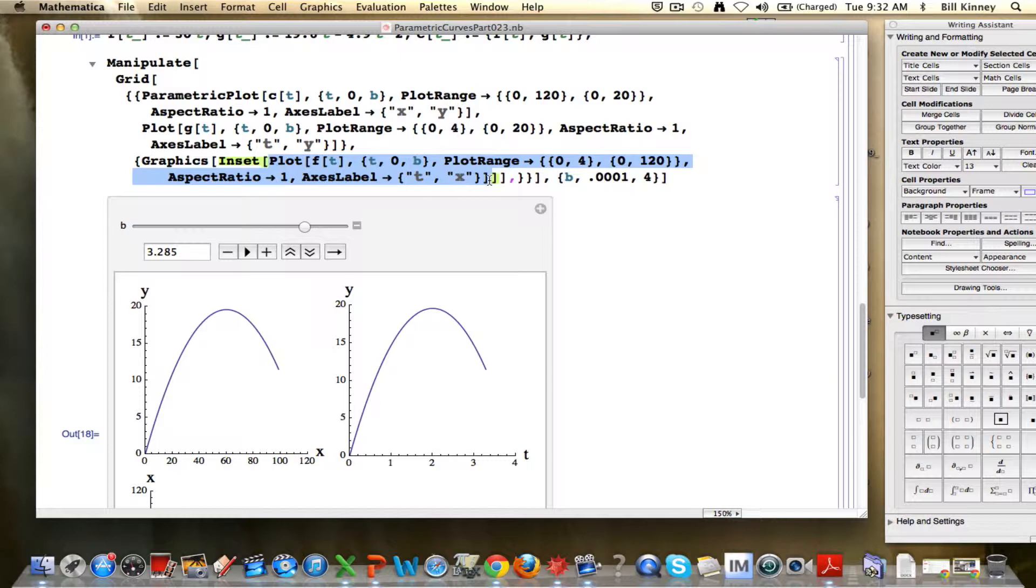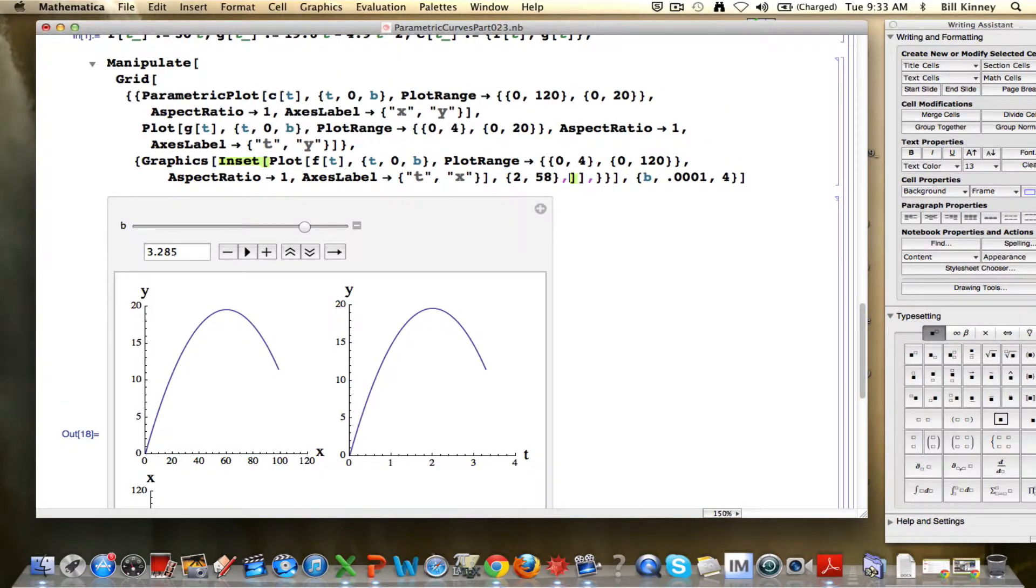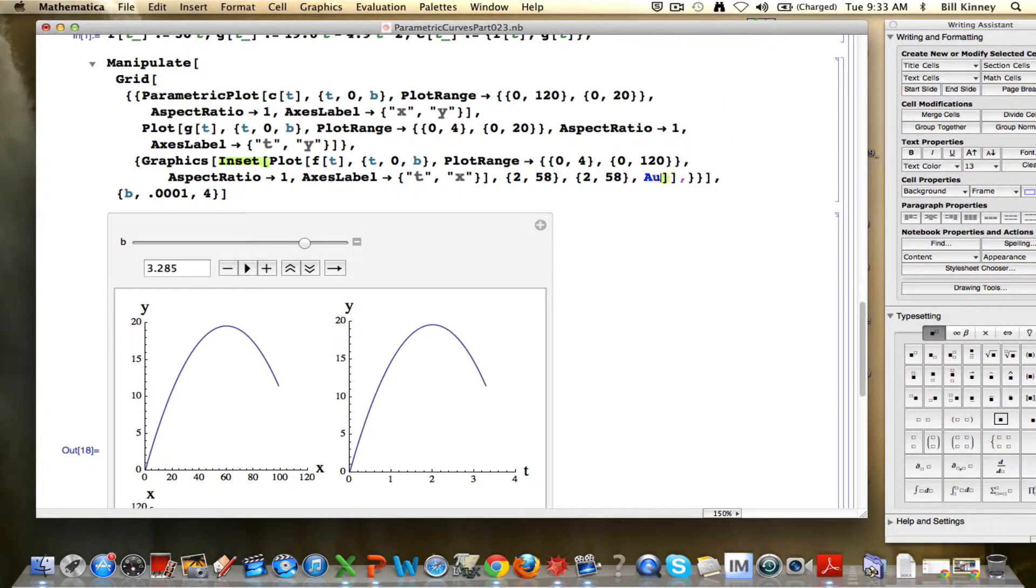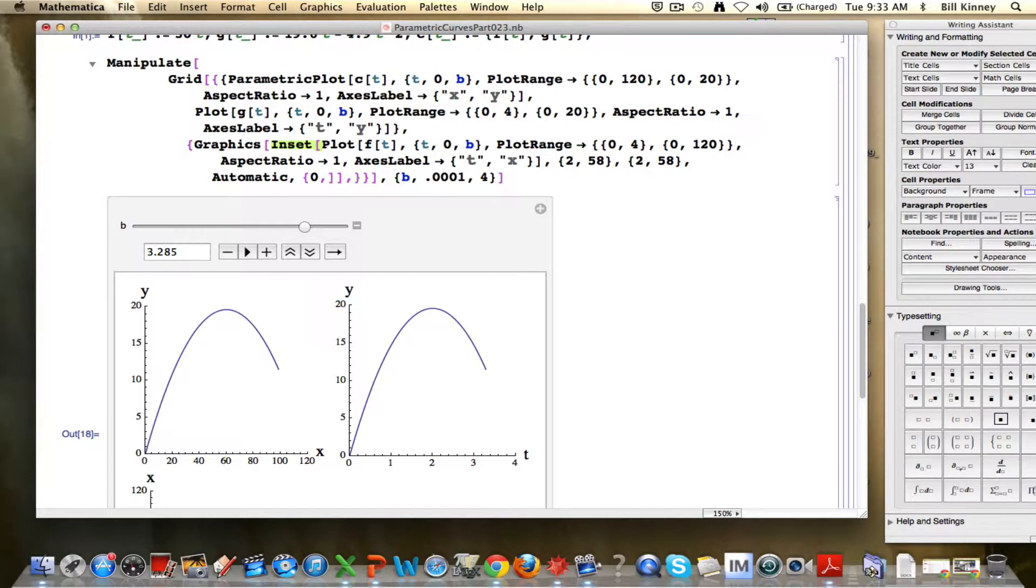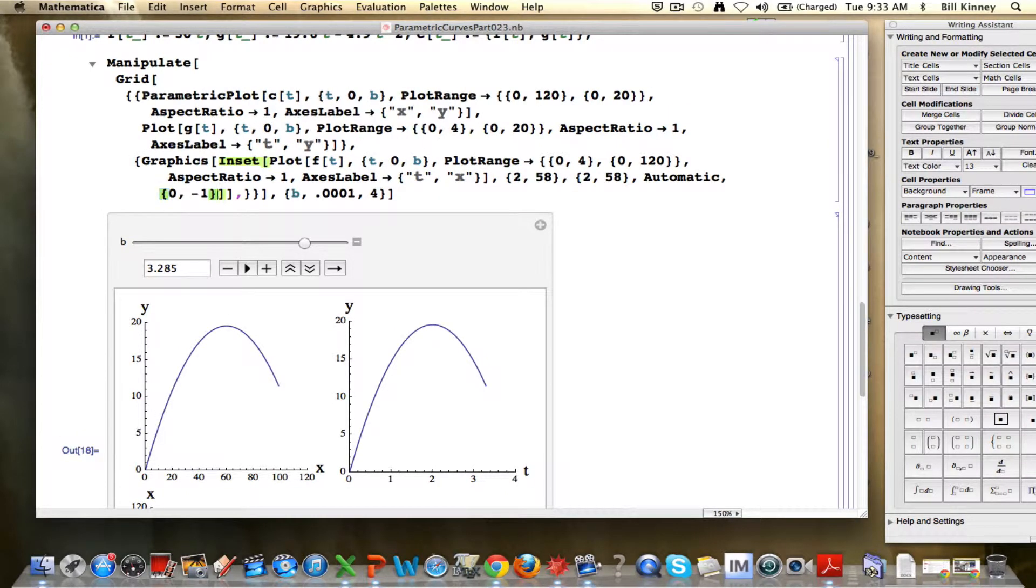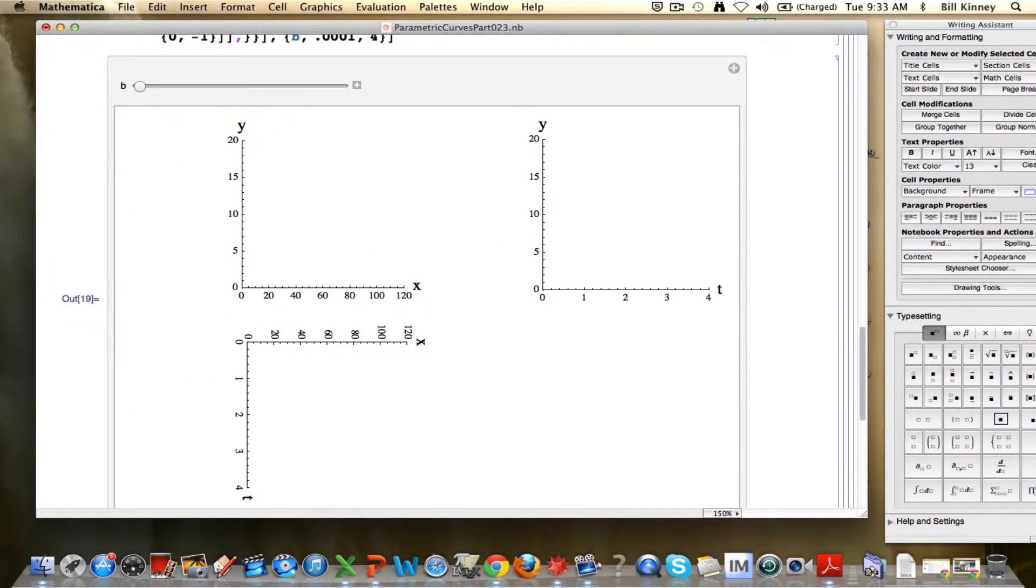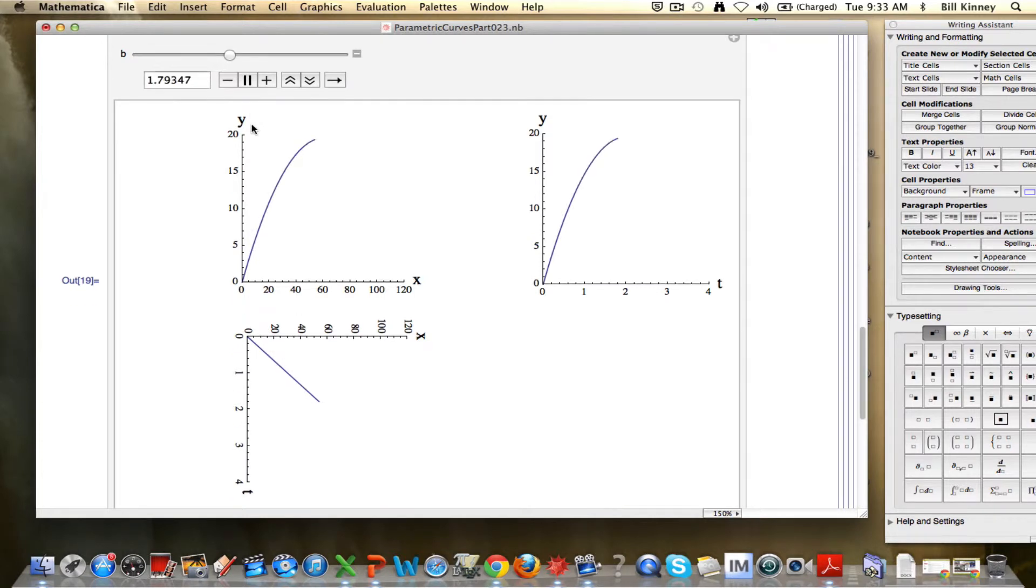It turns out through some experimentation that if I put a comma here, then put 2, 58 in a list, and then 2, 58 again in a list, and then comma automatic, then comma 0, negative 1 in a list that, as if by magic, now we have a rotation and a good position for the graph on the lower left there.